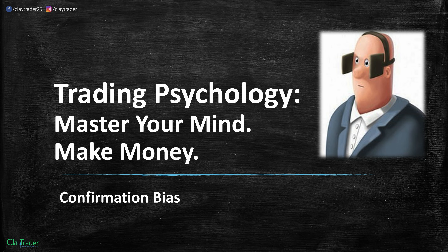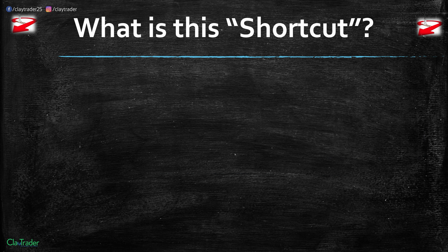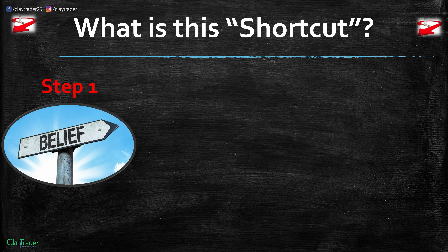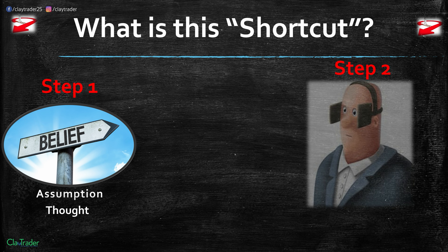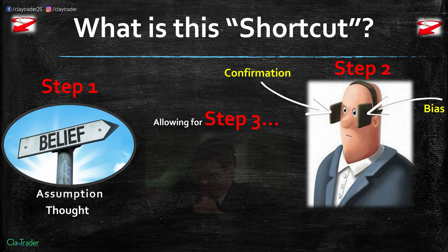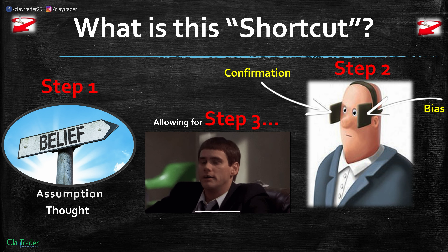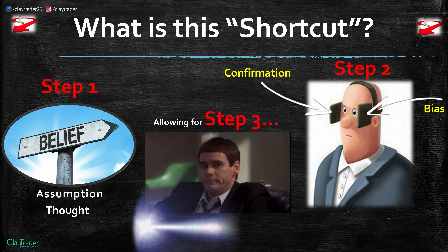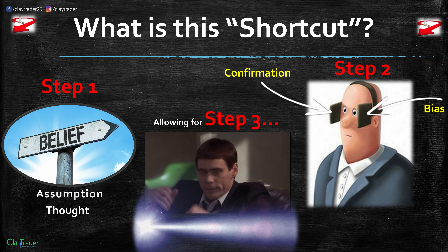Welcome to my desktop. Let's get right into confirmation bias. What is the shortcut? Step one: there needs to be some sort of belief — you can use other words like assumption or thought, but you do need some sort of mental belief in place. Then step two, you're going to start to look just like that. Confirmation bias gets you very narrow-minded, which allows for step three: you get sucked right in. It's a tractor beam — just a thought or belief or assumption, and you're locked in.